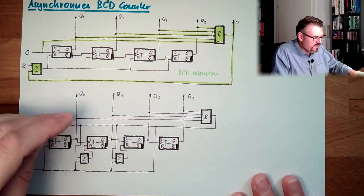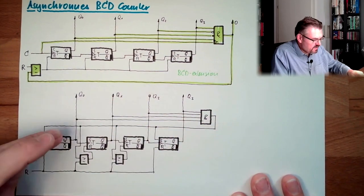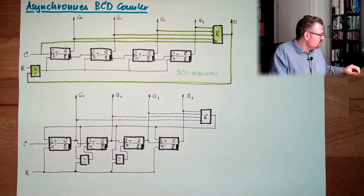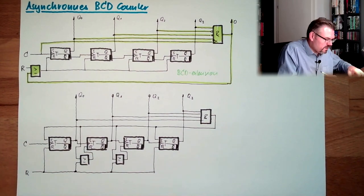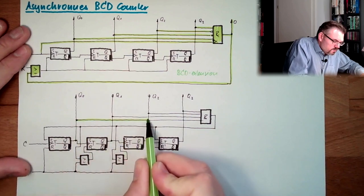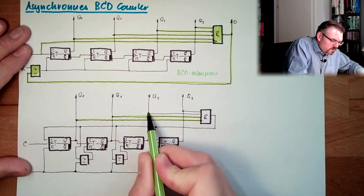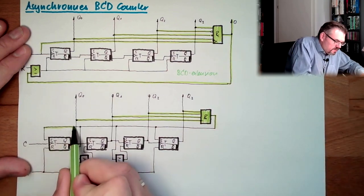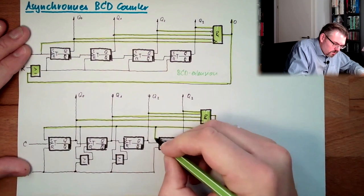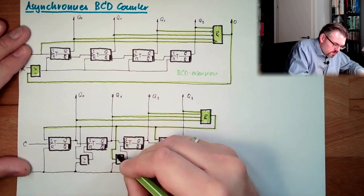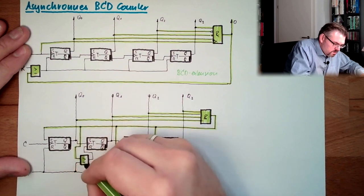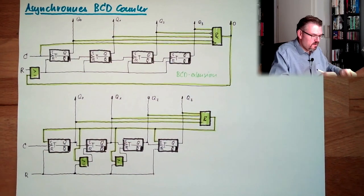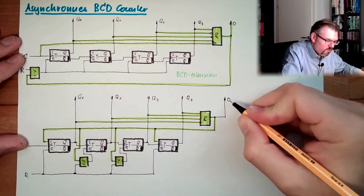This is how this is working. So whenever we are reaching one, one, one, one, we will immediately set it to one, zero, zero, one by the use of those static inputs. So in this case, we have those parts as BCD extension. And if everything is one, so we counted from zero, one down, we will set this thing to one, zero, zero, one, so to nine. Here is the overflow to the next digit.